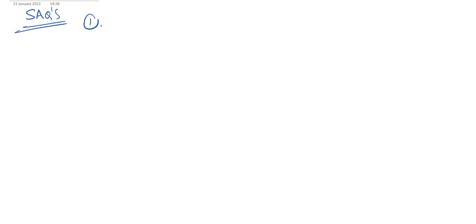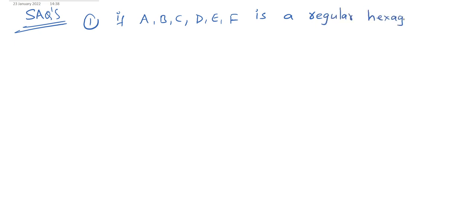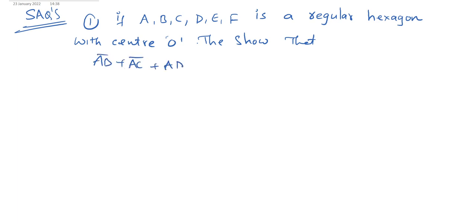First problem: If A, B, C, D, E, F are vertices of a regular hexagon with center O, then show that AB̄ + AC̄ + AD̄ + AĒ + AF̄ = 3AD̄ = 6AŌ.